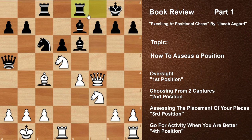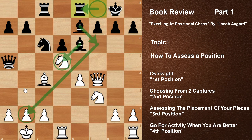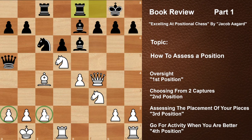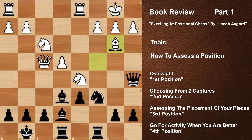Now after rook f8 developing the rook, then Black plays bishop f6 — the bishop will be on the long diagonal. Then bishop b3 — now we are going to protect both of these pawns. Remember bishop b3 — now the bishop on b3 is a very important piece. The bishop is protecting both pawns on e2 and c2.